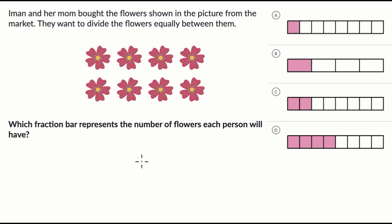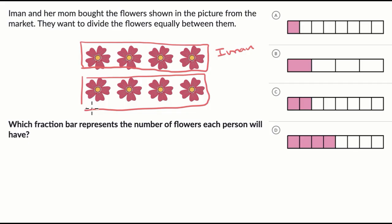Now before I even think about fraction bars and what that even means, let's just think about this straight up. We have eight flowers here. They're gonna divide them equally between them. So half of them could go to Iman and then the other half could go to her mom.